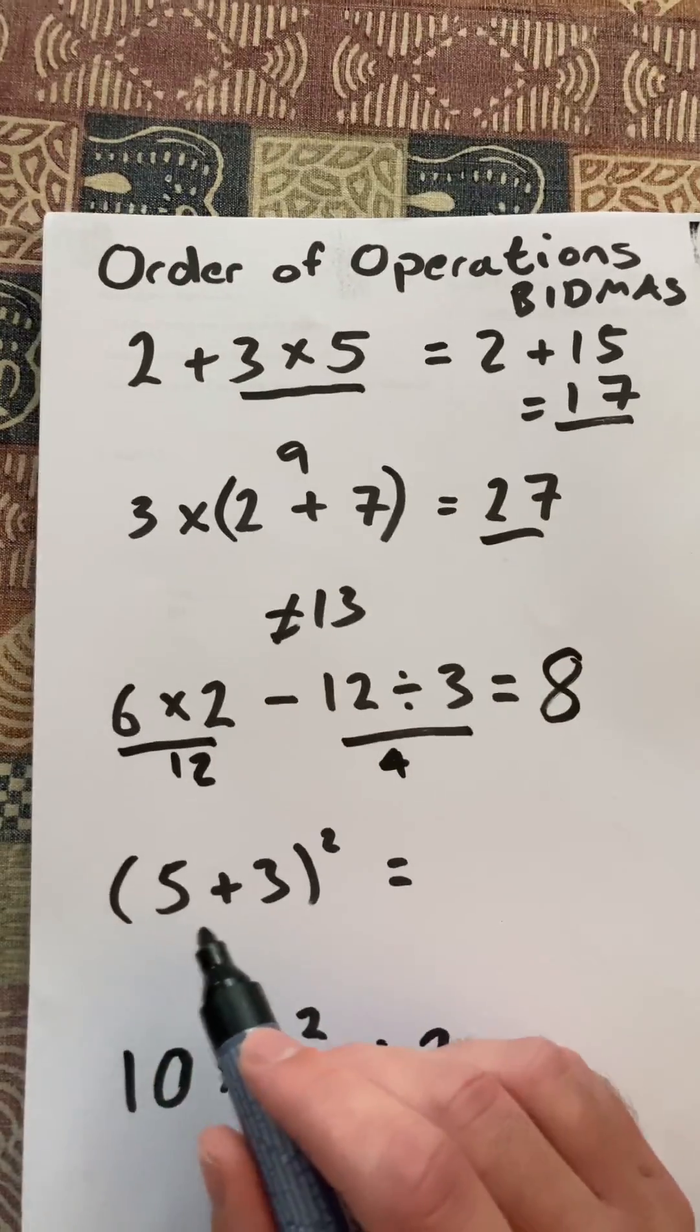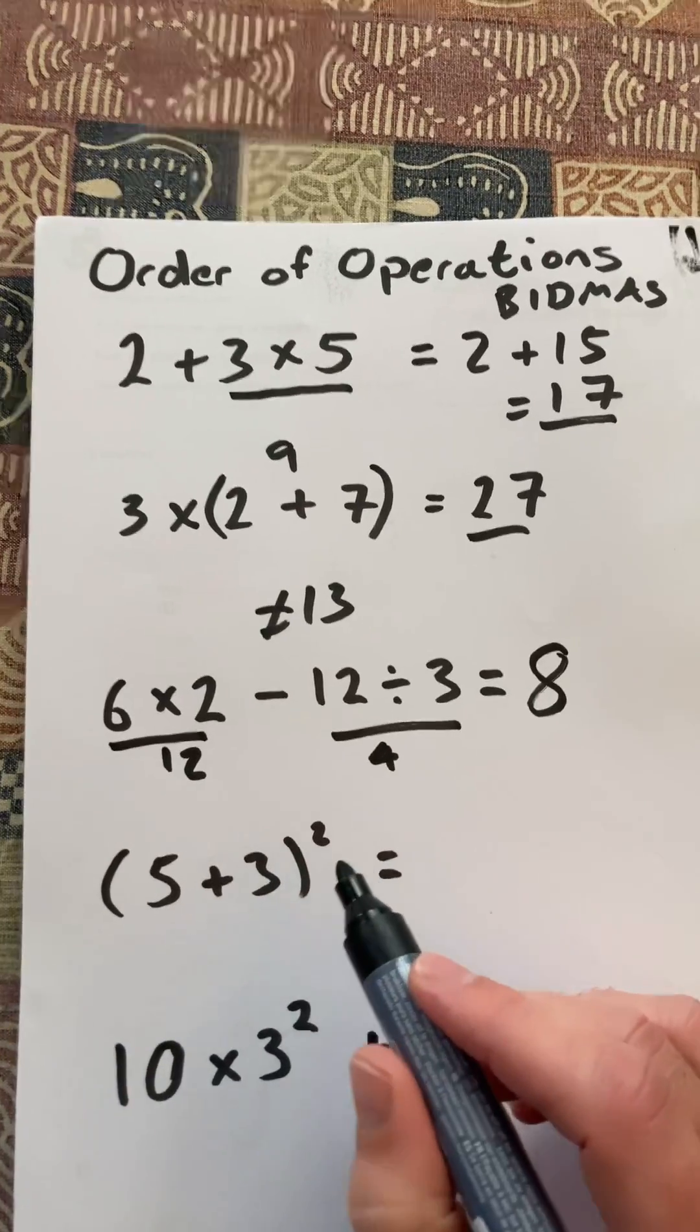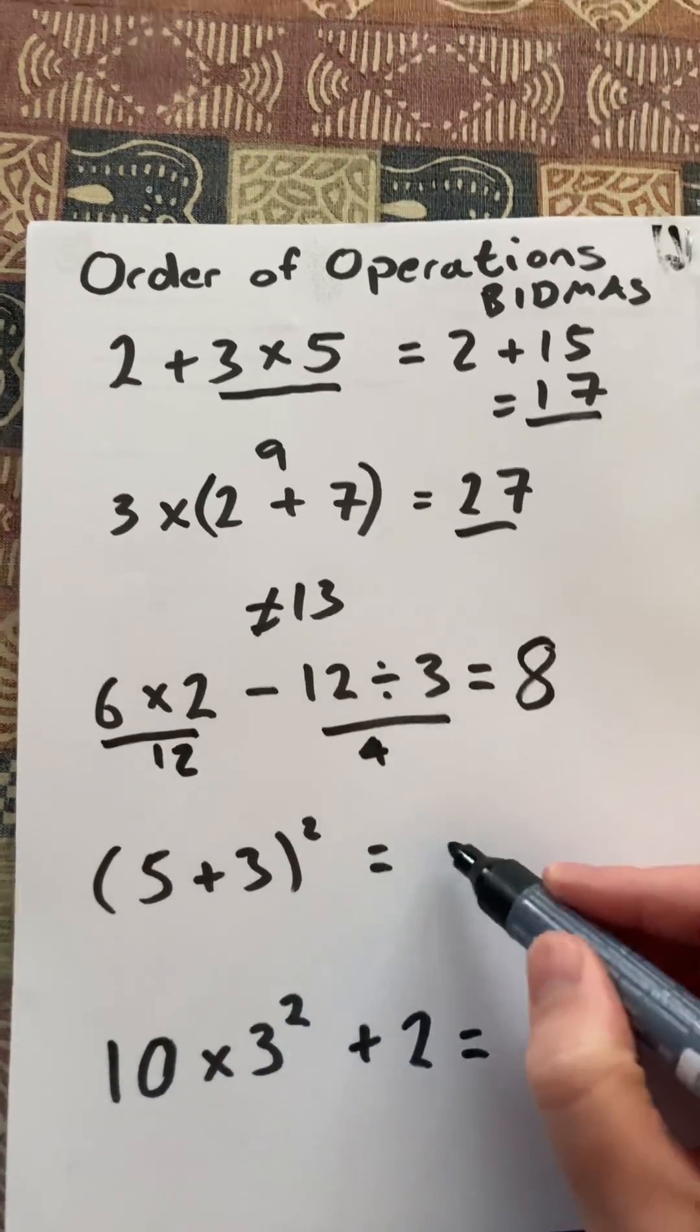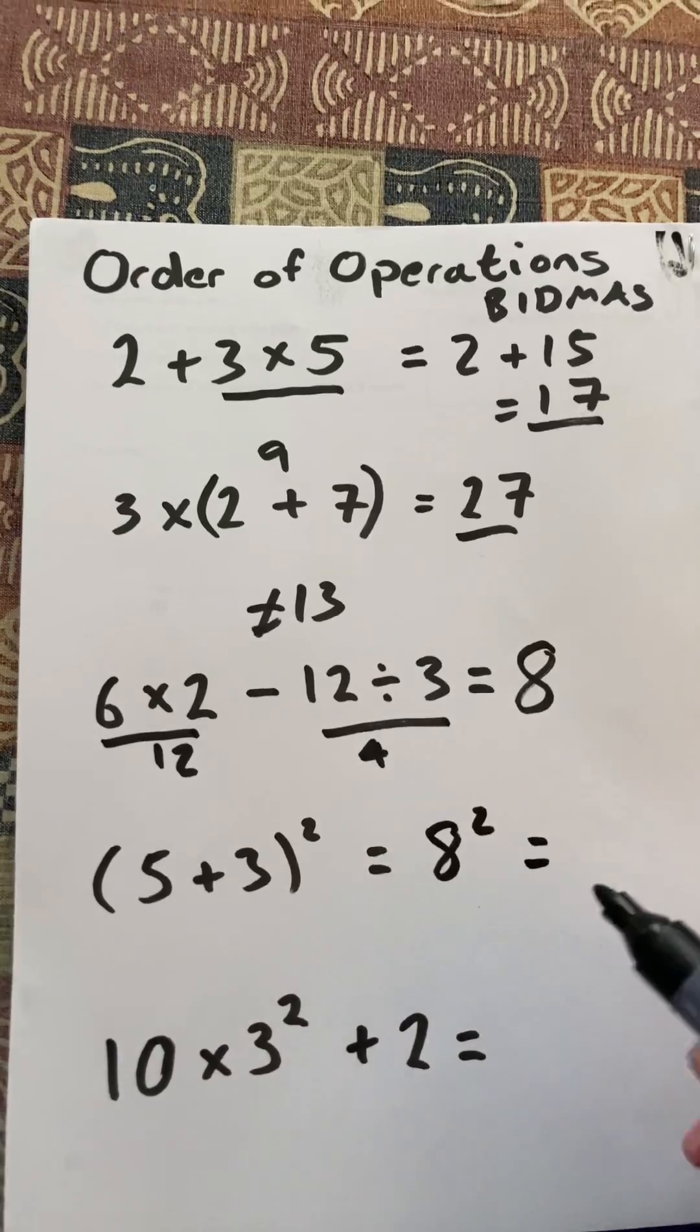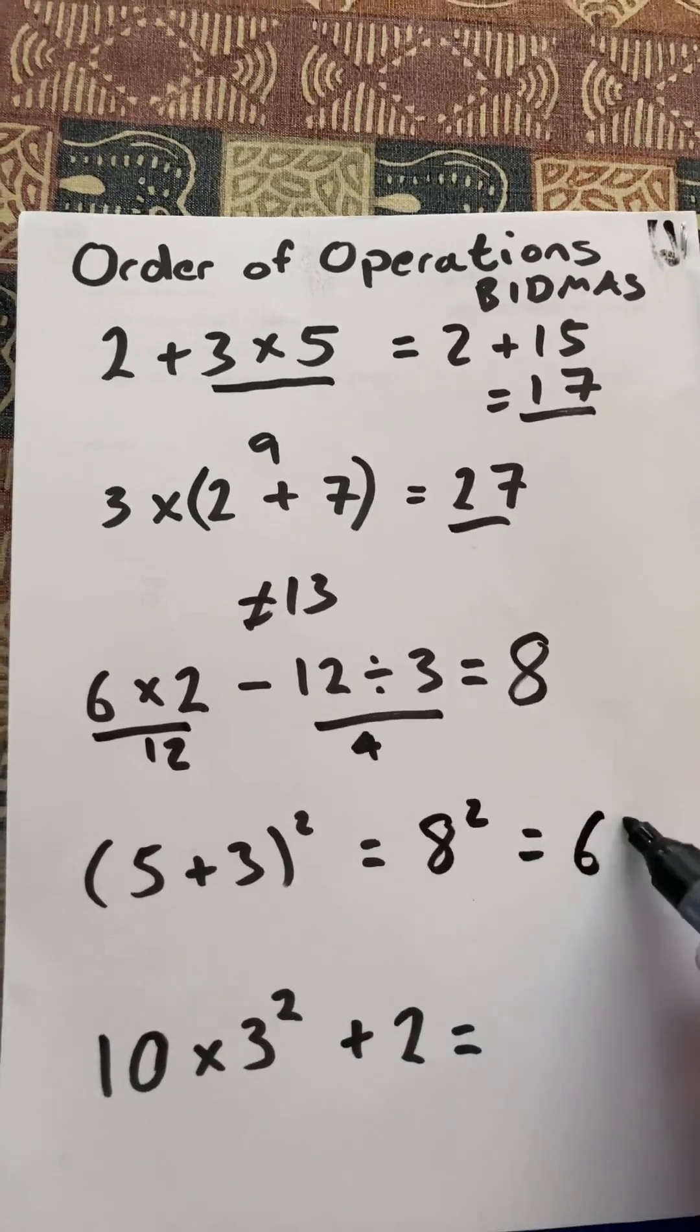Next one, (5 + 3)² so I do the brackets first, so it's 8². 8 squared is then 64.